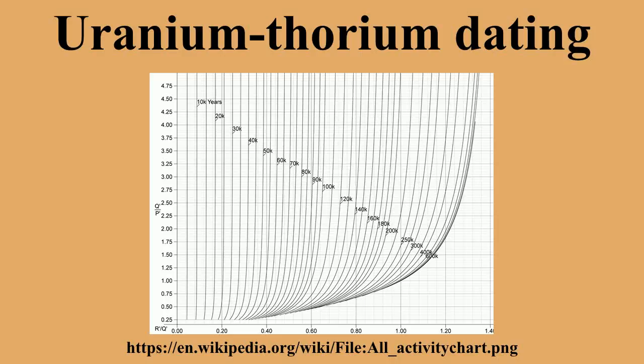Uranium-thorium dating has an upper age limit of somewhat over 500,000 years, defined by the half-life of thorium-230, the precision with which we can measure the thorium-230/uranium-234 ratio in a sample, and the accuracy to which we know the half-lives of thorium-230 and uranium-234. Note that to calculate an age using this technique, the ratio of uranium-234 to its parent isotope uranium-238 must also be measured.